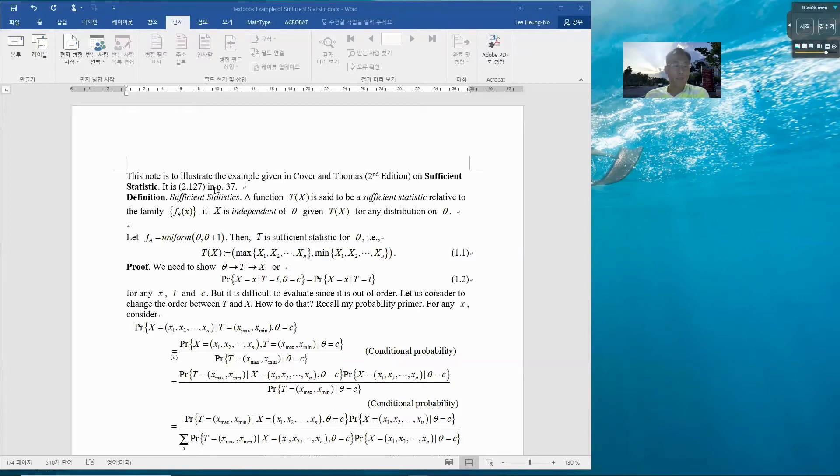The textbook example was to consider if this is the sufficient statistic for theta or not. Theta is a uniform distribution in the interval from theta to theta plus one. If theta is c, it should be c to c plus one. In such a case, T is a sufficient statistic for theta.